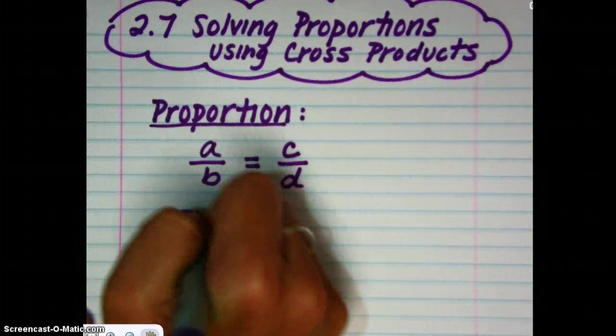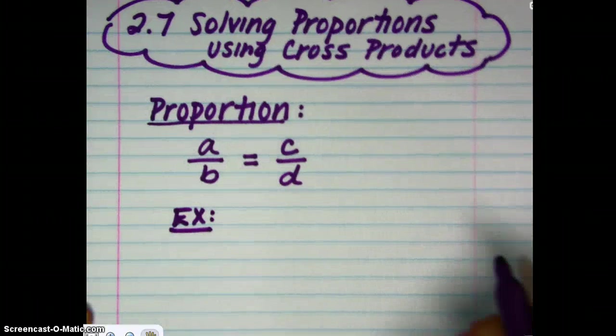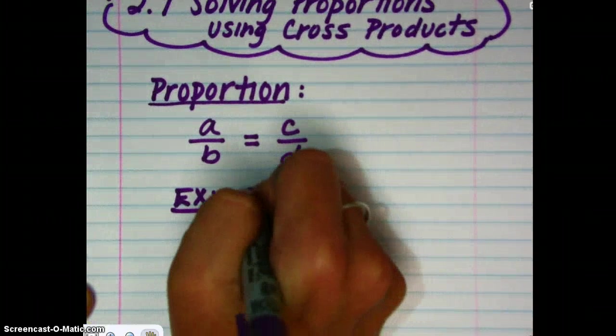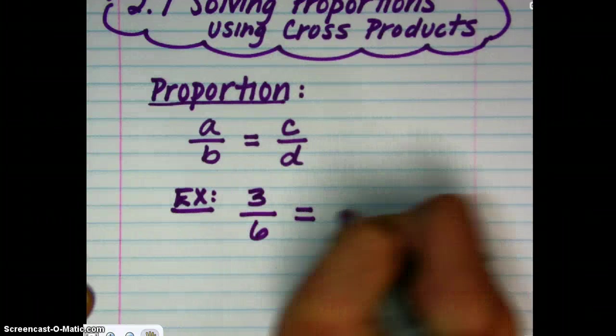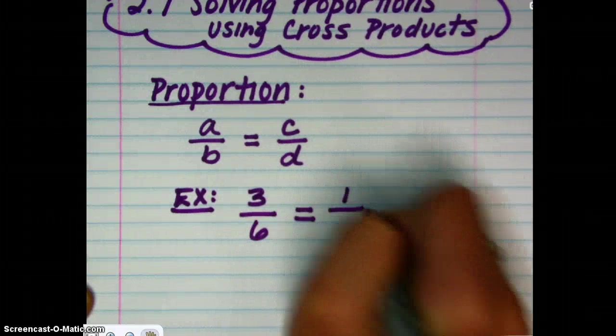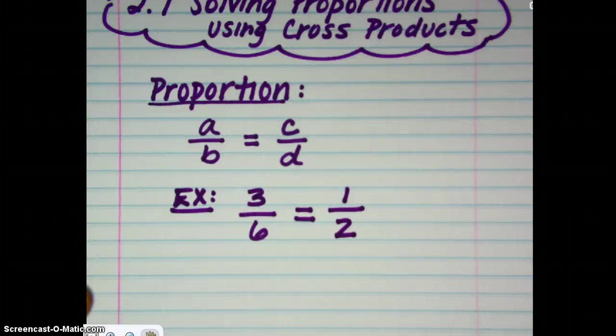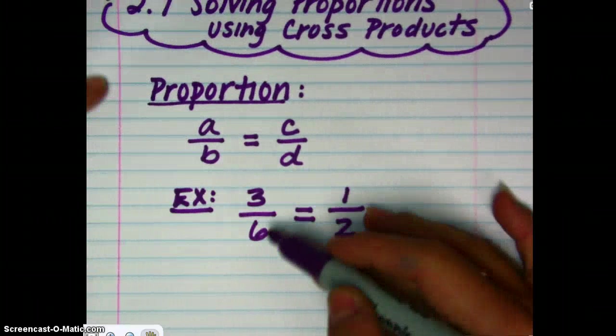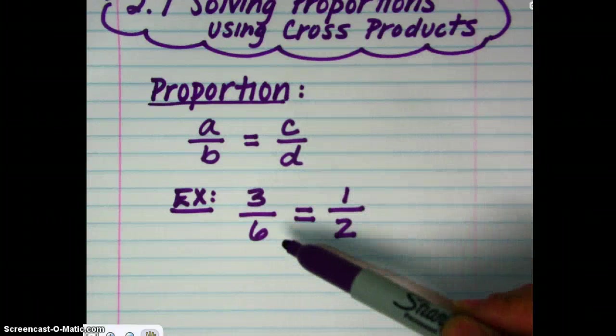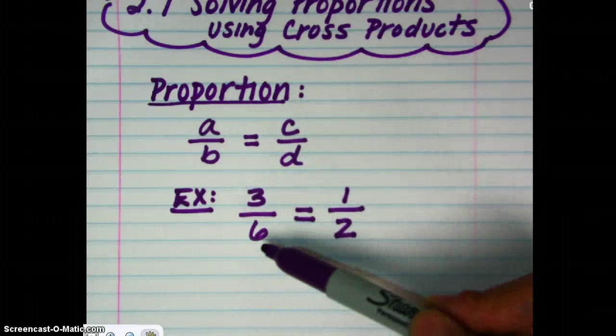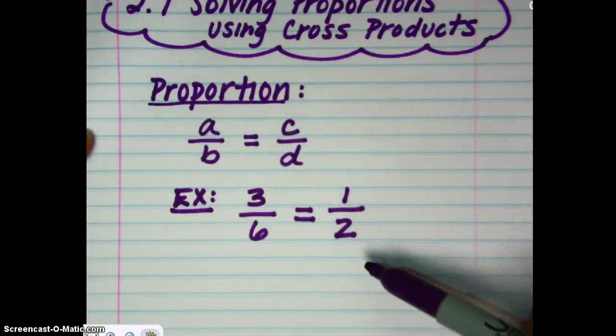An example, which you would likely be familiar with, is the proportion 3 to 6, or 3-6, is equivalent or equal to 1 to 2, 1 half. I think you could all agree that those two are equal. So, oftentimes a proportion is basically just showing the relationship of two fractions being equal to one another.